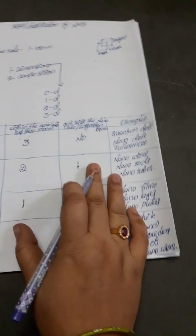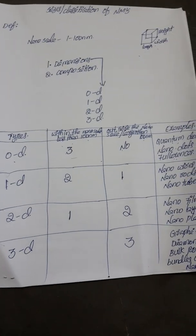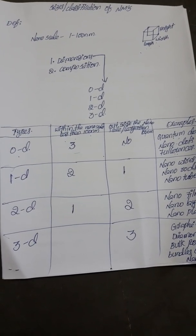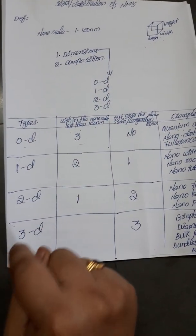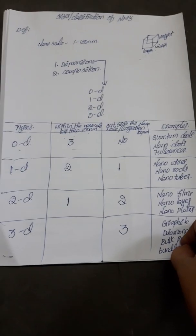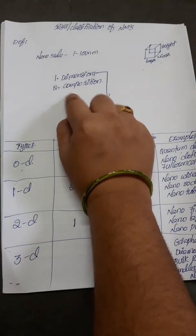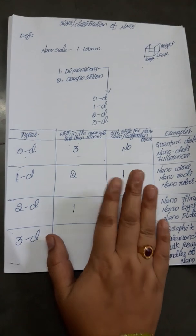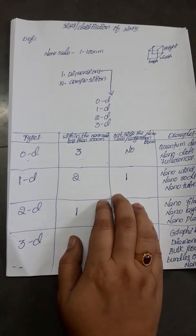This is the classification based on dimensions. We discussed the classification of nanomaterials based on dimension: zero dimensional, one dimensional, two dimensional, and three dimensional, along with their definitions and examples. In the next video I will discuss the classification of nanomaterials based on composition. I have already provided material on this topic — please go through it. If you have any doubts, let me know. Thank you.